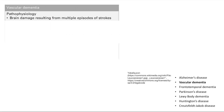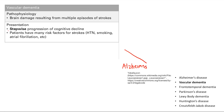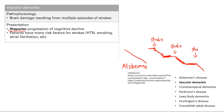Next is vascular dementia, caused by brain damage resulting from multiple episodes of strokes. Alzheimer's presents with a gradual decline over time. Vascular dementia, due to multiple strokes, shows a stepwise progression of cognitive decline. The patient is doing well, then they get a stroke — cognitive decline — then they stabilize. Then another stroke — another step down in cognitive ability. Then they stabilize again, and the cycle repeats.